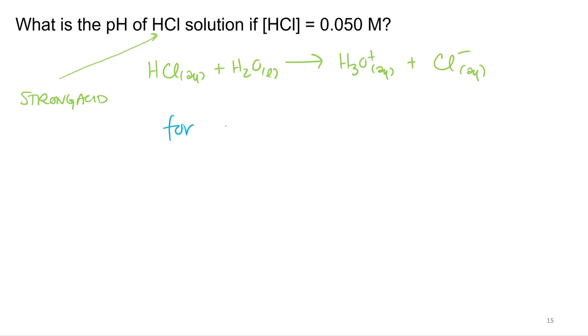So for strong acids, the concentration of the strong acid equals the hydronium. Always? Always. It's very rare that I get to say always in a general chemistry class. There's always exceptions, but no, it's always true. Actually, I had to say SA, strong acid.